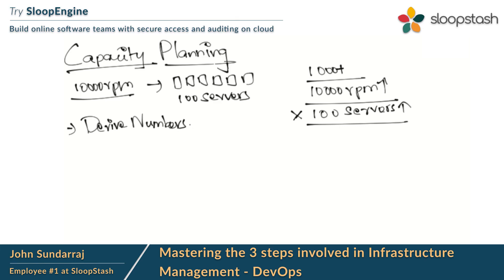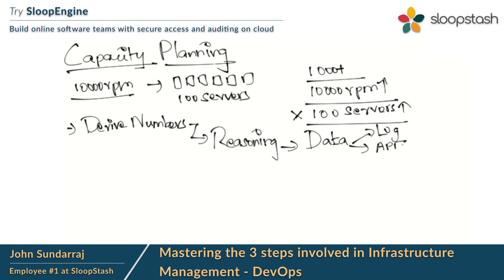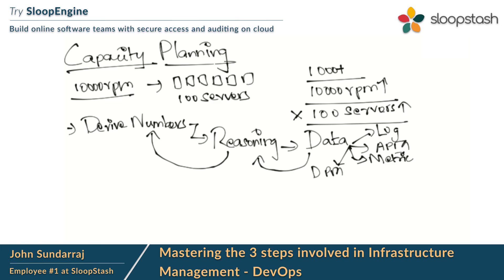So how do we derive these numbers? To derive the numbers, we need to have proper reasoning, and we cannot just derive a number without it. To have proper reasoning, we need proper data — log data, application performance data, metrics data, database performance data, and lots more. We need to collect, extract, and process all this data in order to have proper reasoning. The derivation of numbers is purely dependent on the reasoning behind the data analytics.